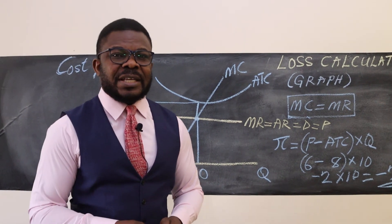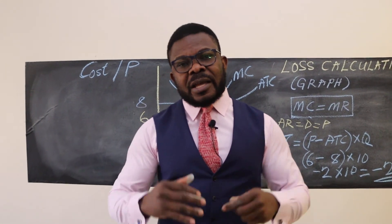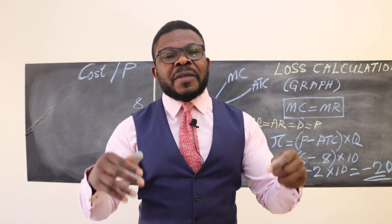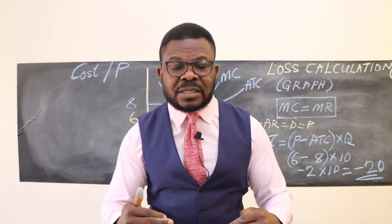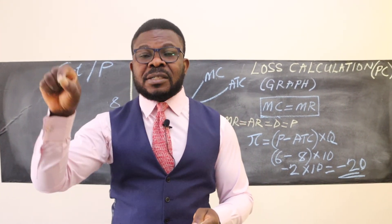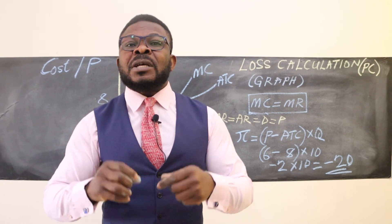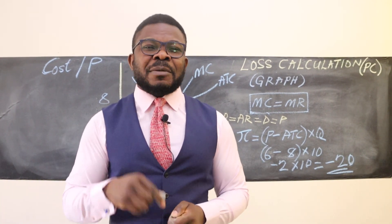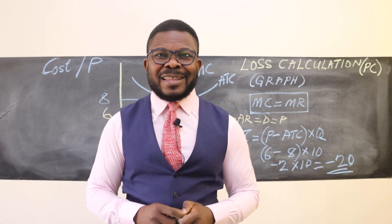With this sort of graph, you should be able to work out the loss very easily. Always bear in mind: if the ATC is higher than the price, there's going to be a loss. If ATC is below the price line, there's going to be a profit. If the ATC is right tangential to the price line, that leads to zero profit, which I'll cover in the next lesson. Thank you.